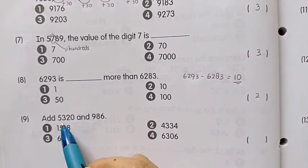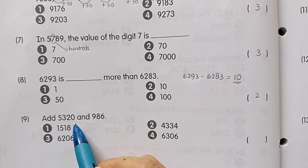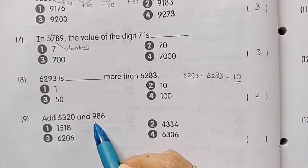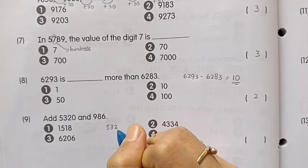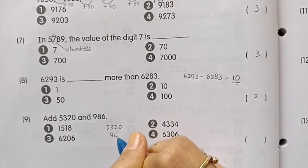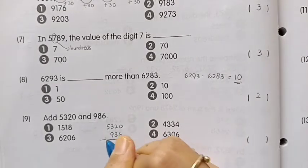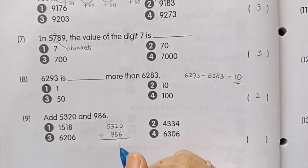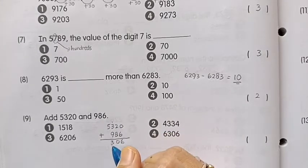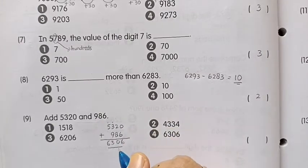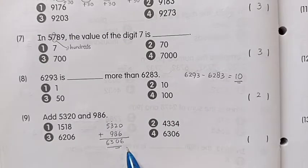Number 9: Add 5320 and 986. We do addition and we got the answer 6306. The answer is number 4.